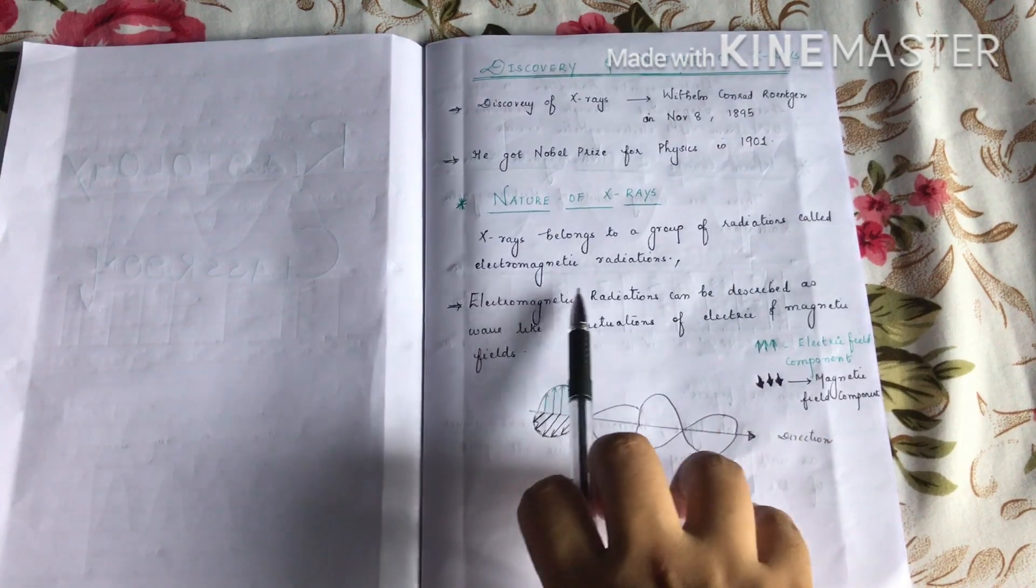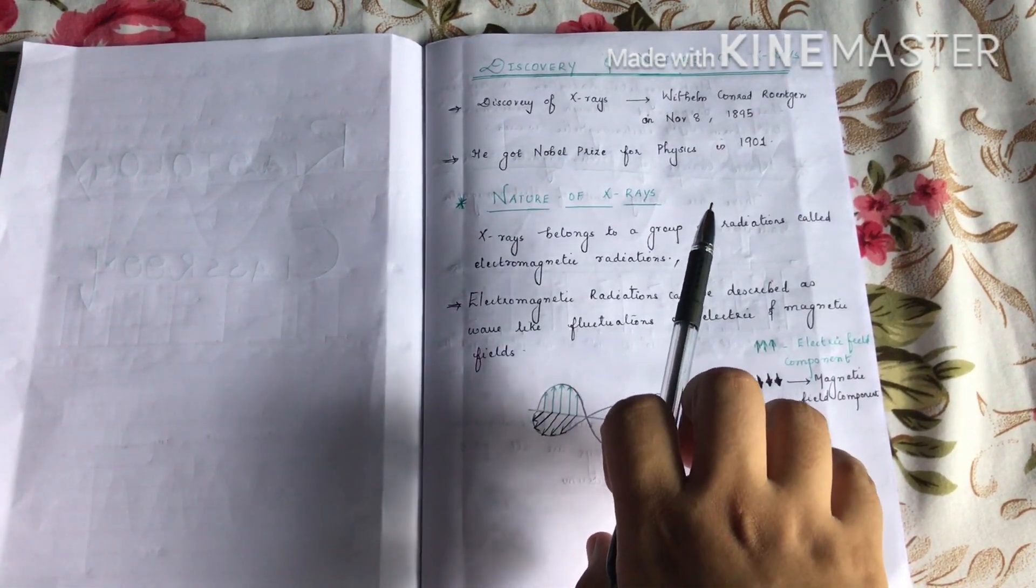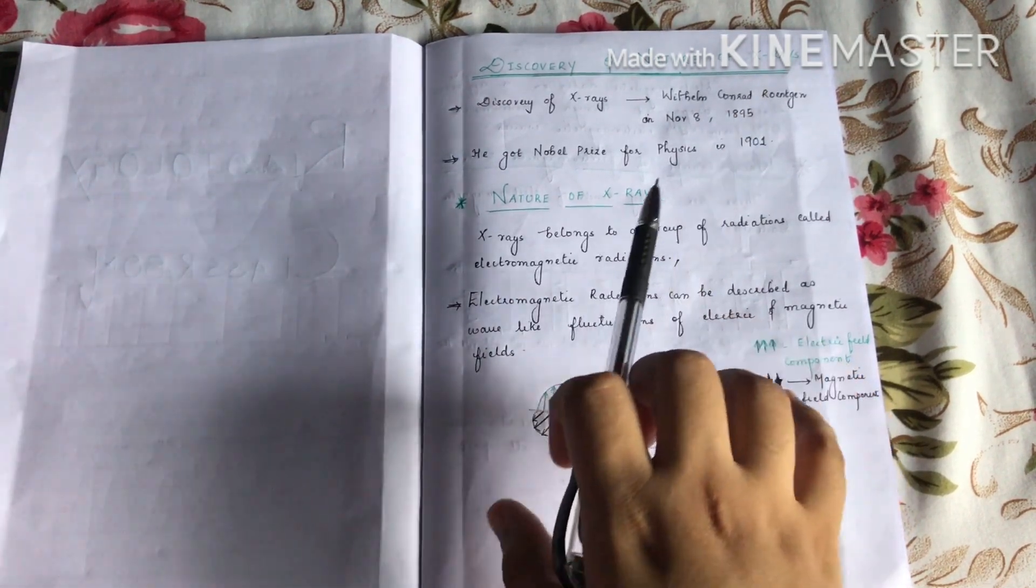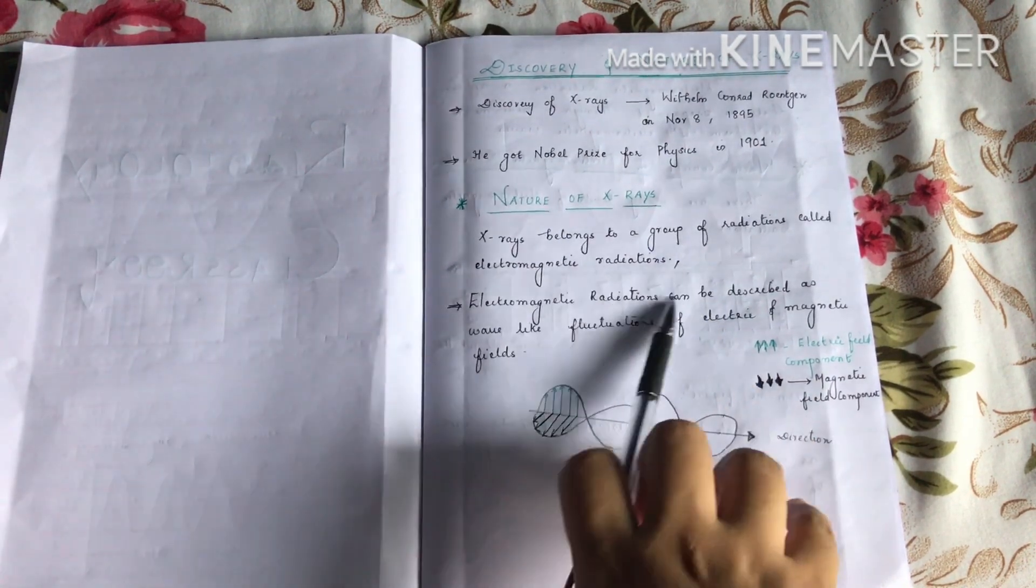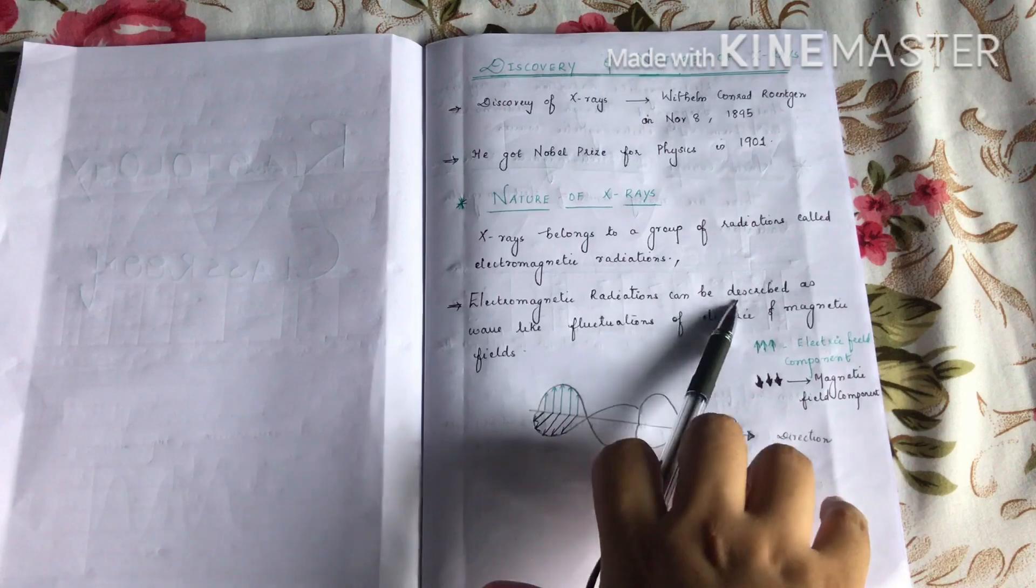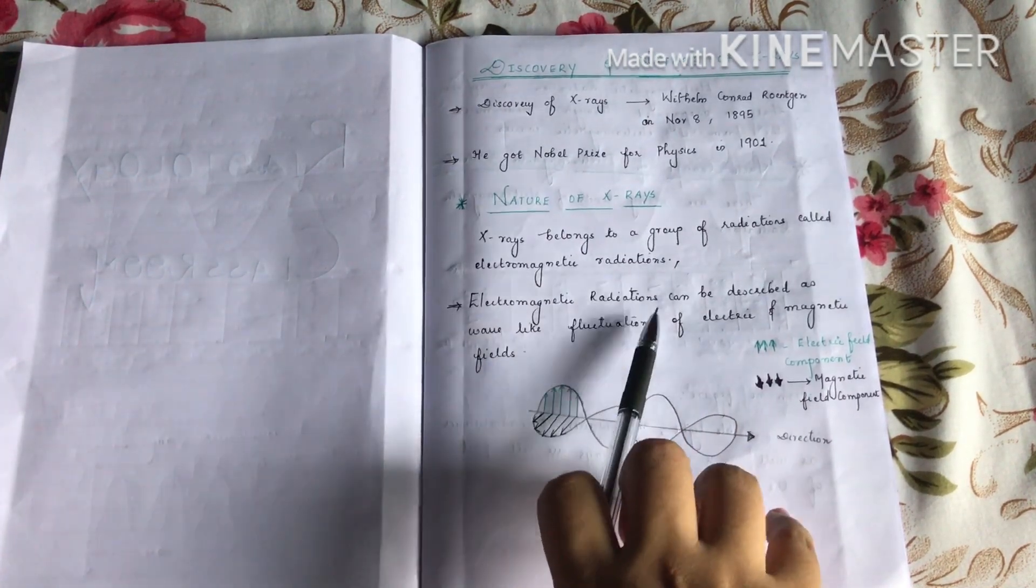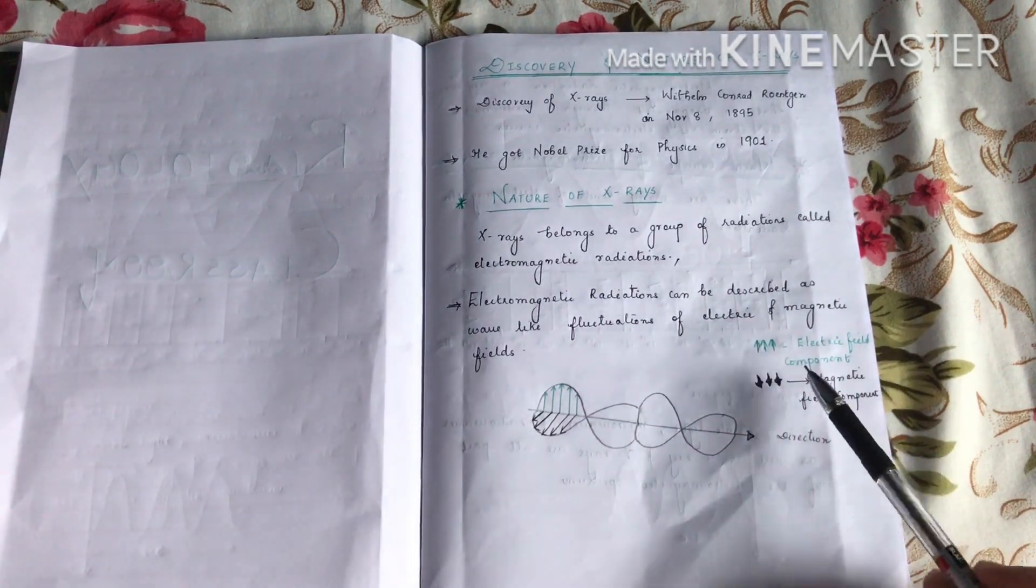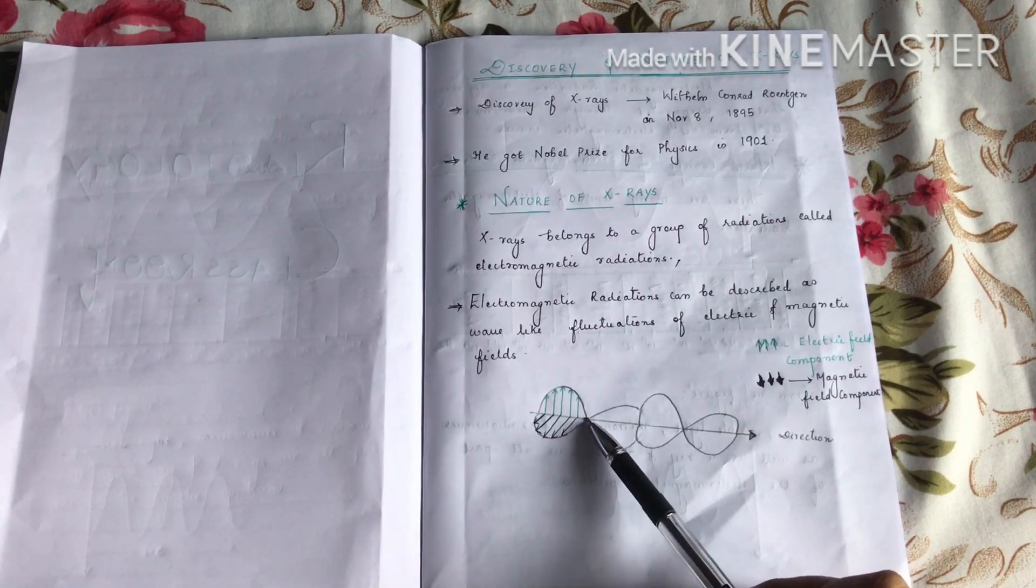What is electromagnetic radiation? Scottish physicist James Clerk Maxwell predicted electromagnetic waves existing. It is described as a wave, like fluctuations of electric and magnetic field. That is, it has an electric field component and the magnetic field component.